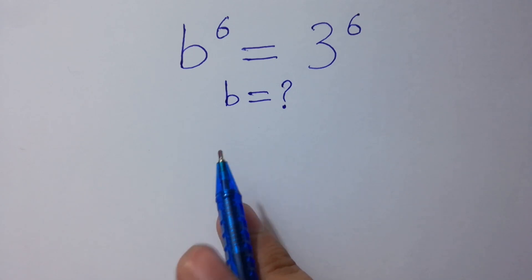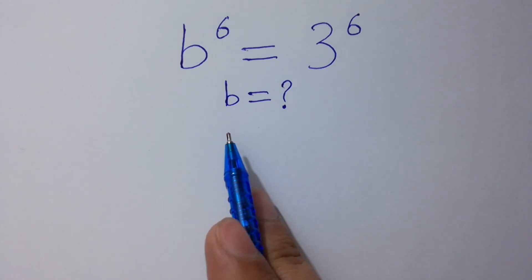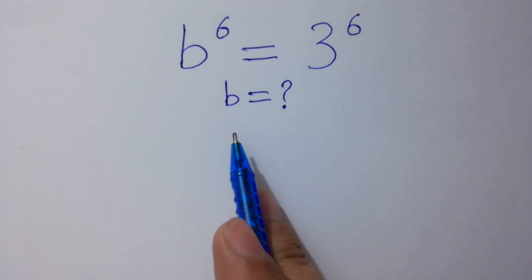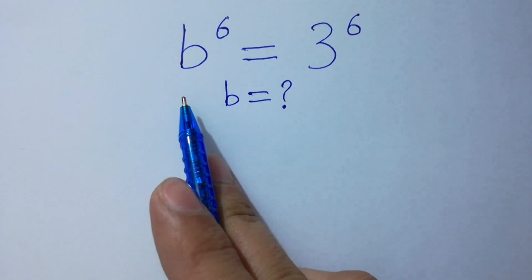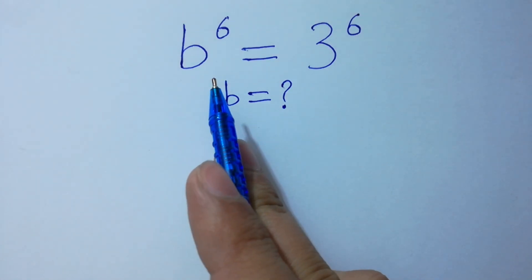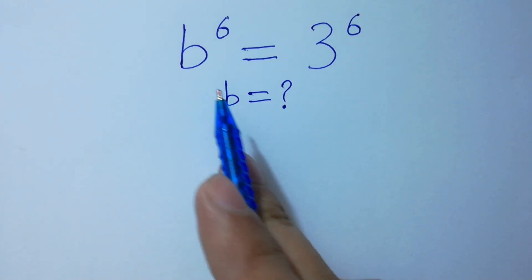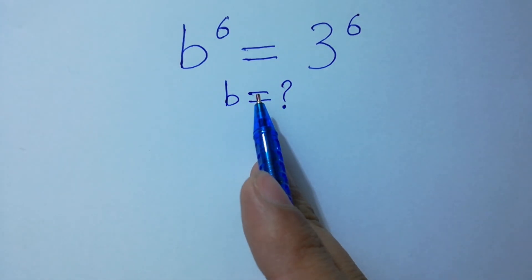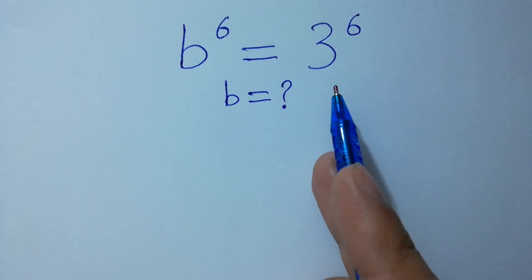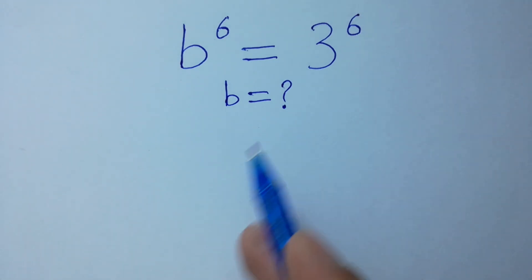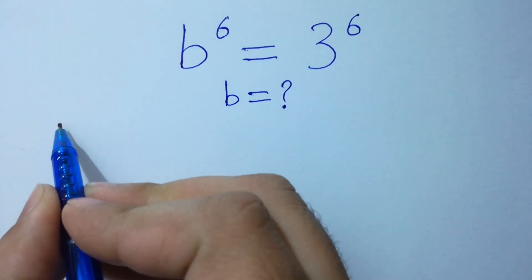Hello friends, find the value of B if B to the power 6 equals 3 to the power 6. Let's have a solution.